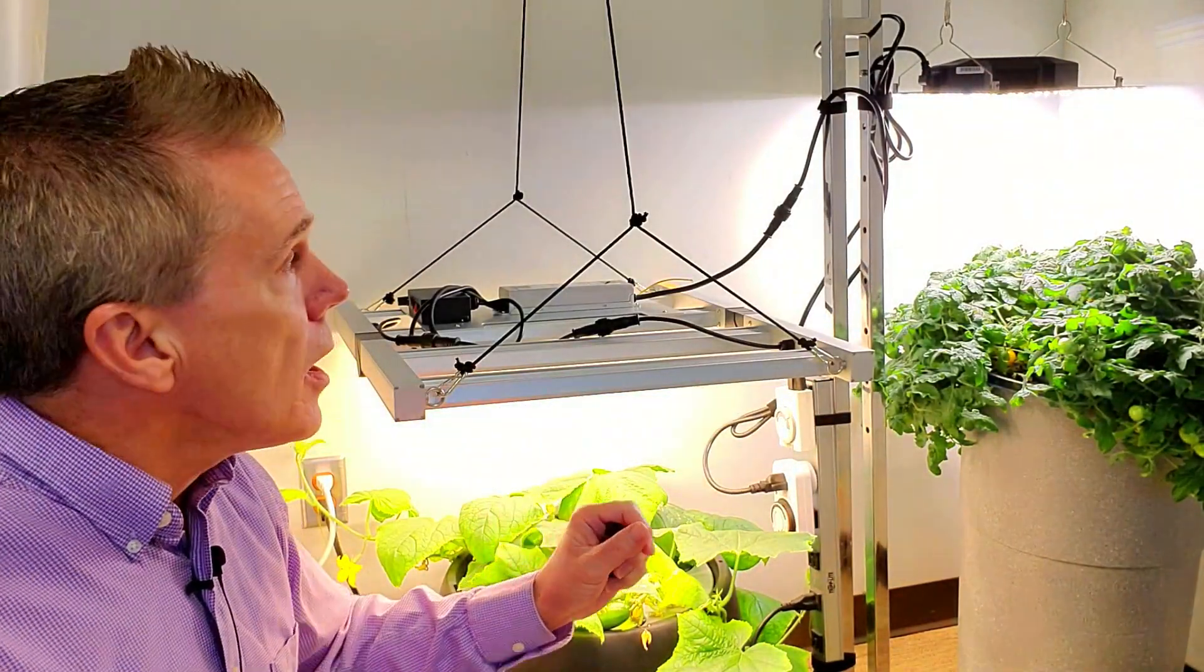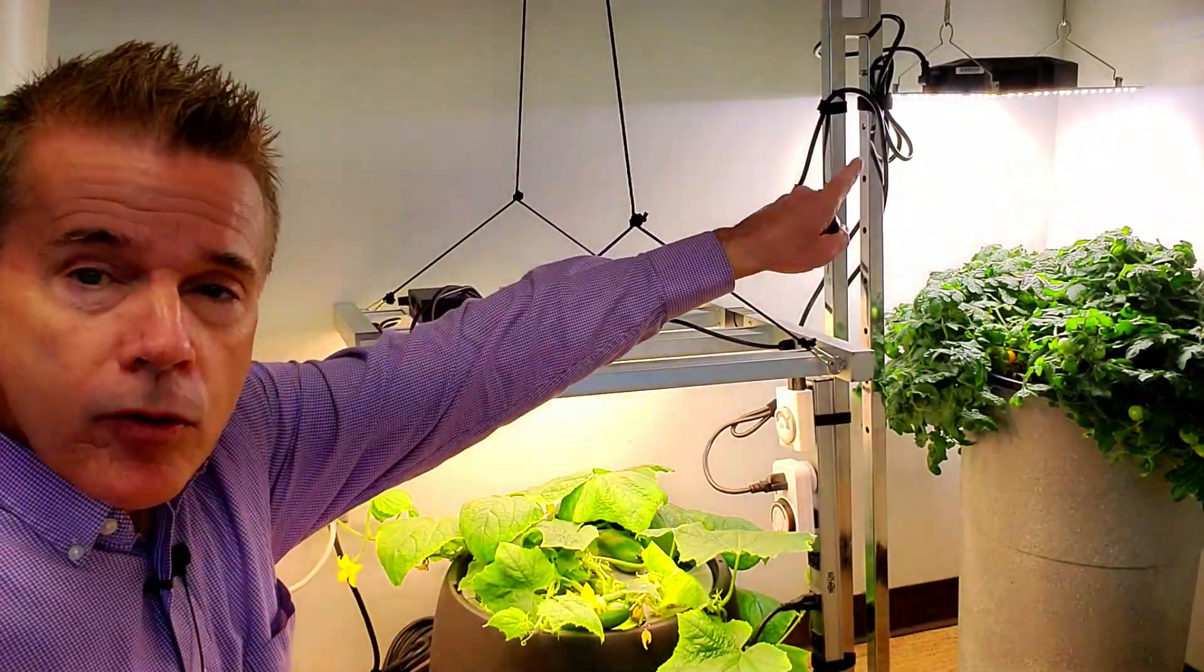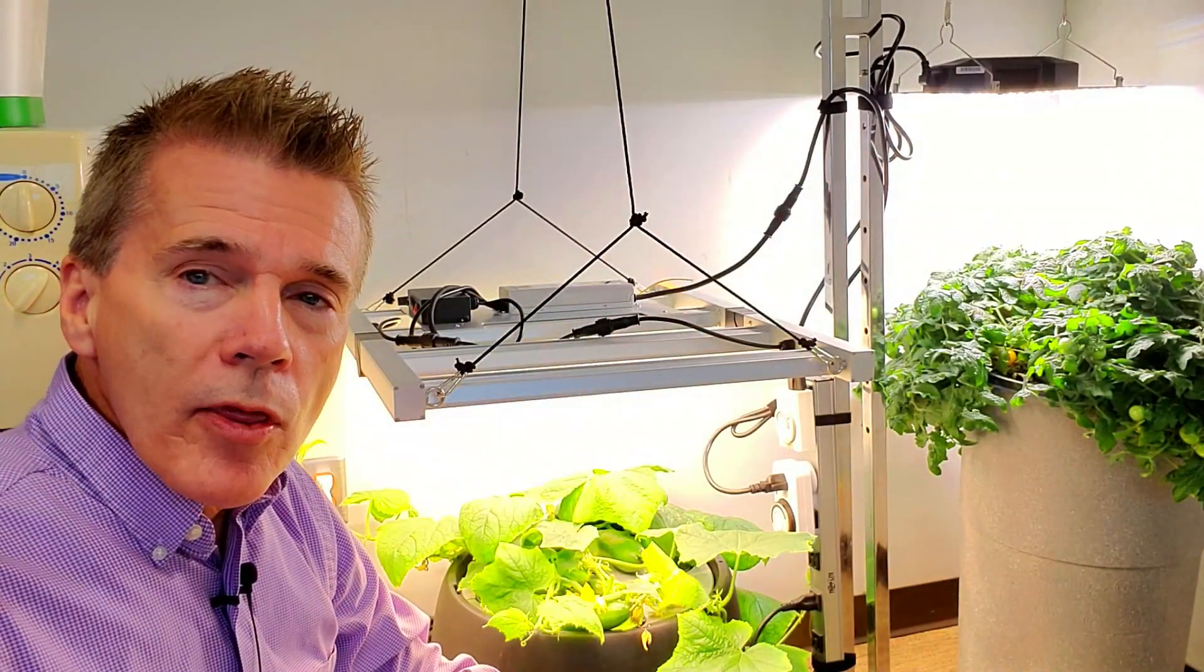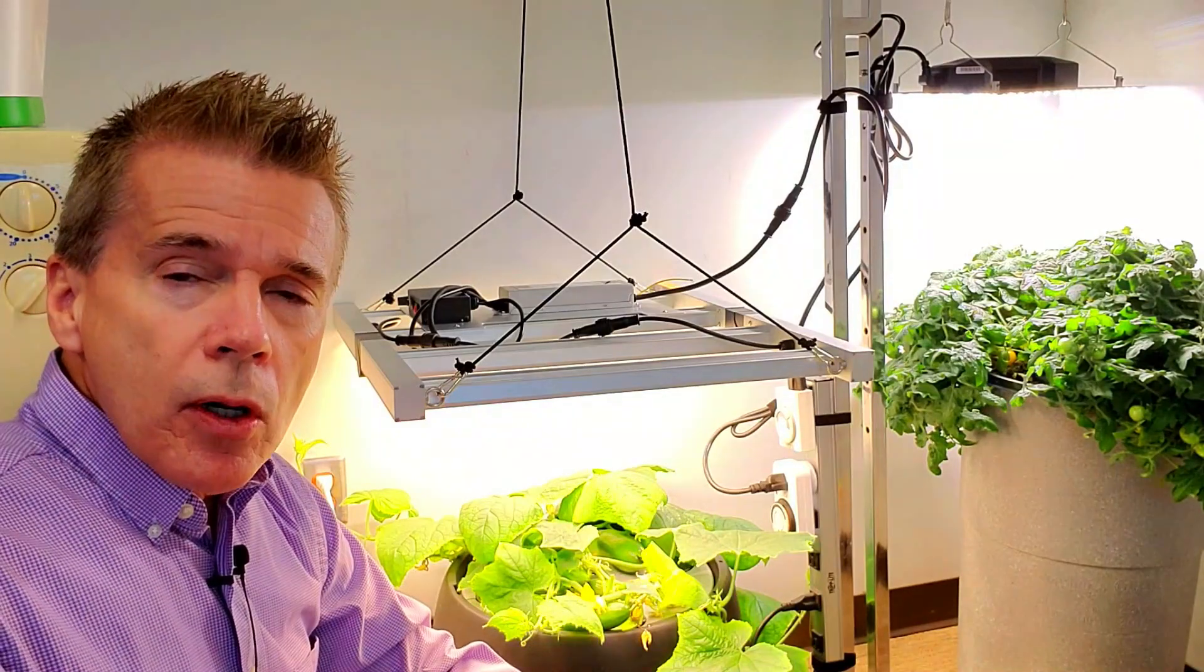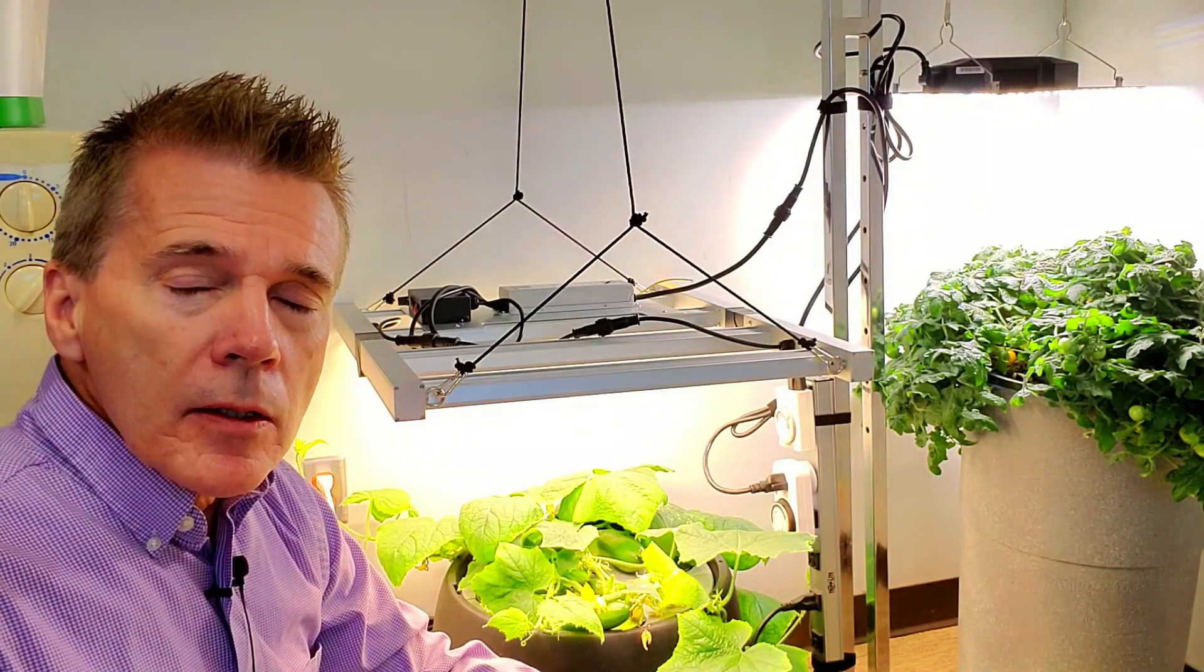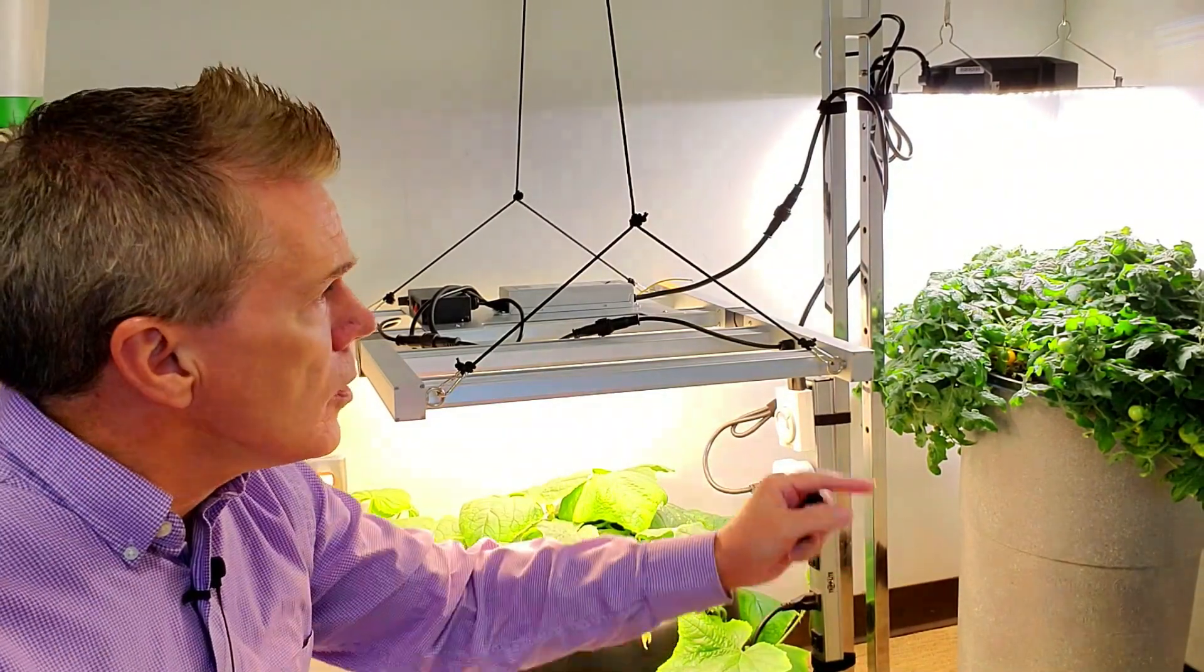About the lights that I'm using, this is a VivoSun VS1000 and this other light is a Grostar MN-W3000. The VivoSun is around 100 watts, whereas the Grostar light is around 220 watts.